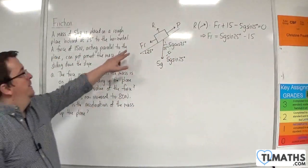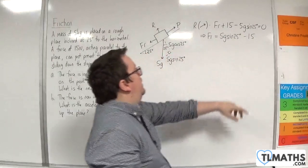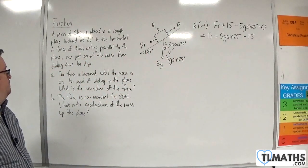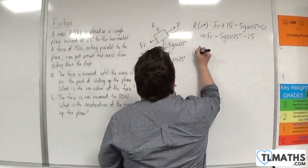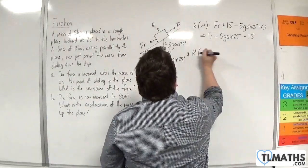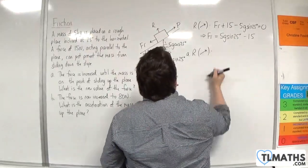P, the friction is now working against the direction of motion. And the friction here is the 5g sin of 25 take away 15. Okay, so now if I resolve parallel to the plane, so this is for part A, resolve parallel to the plane, taking up the plane as positive.